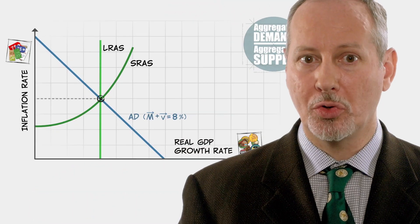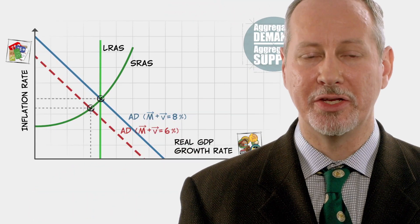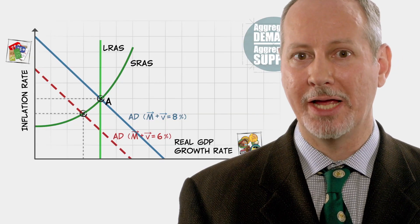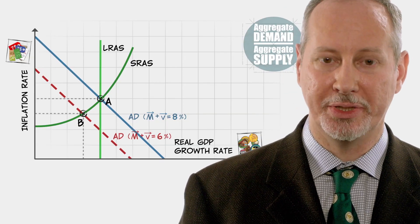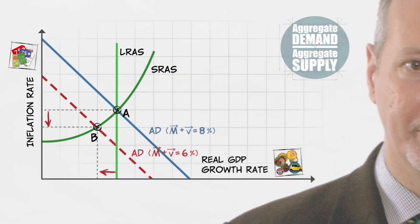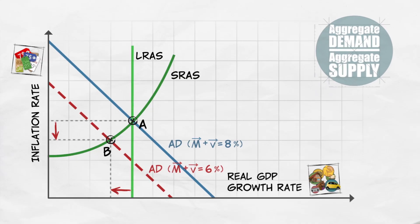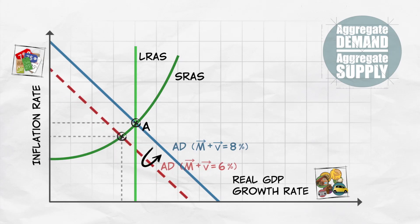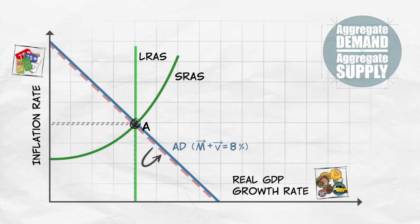In the short run, the decrease in spending moves the economy from point A to point B, where inflation and real growth are both reduced. In the long run, however, fear recedes, prices and wages adjust, and the economy moves back to point A.